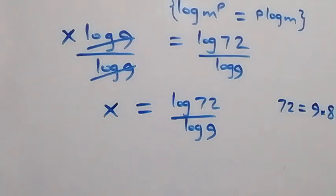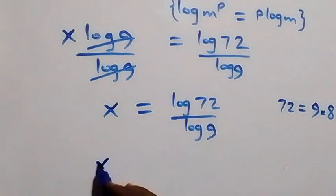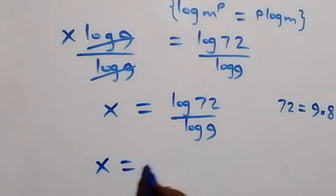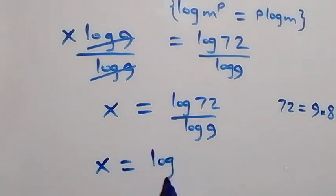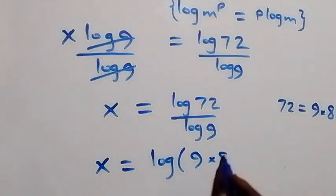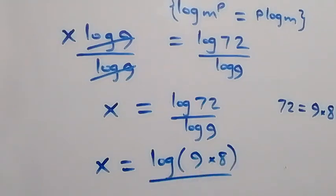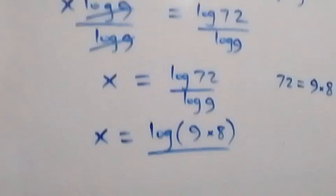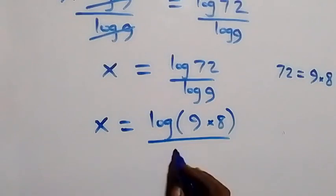From here we can simplify further. We can separate 72 as 9 multiplied by 8, so what we have can be written as x equals log of (9 times 8), over log 9.